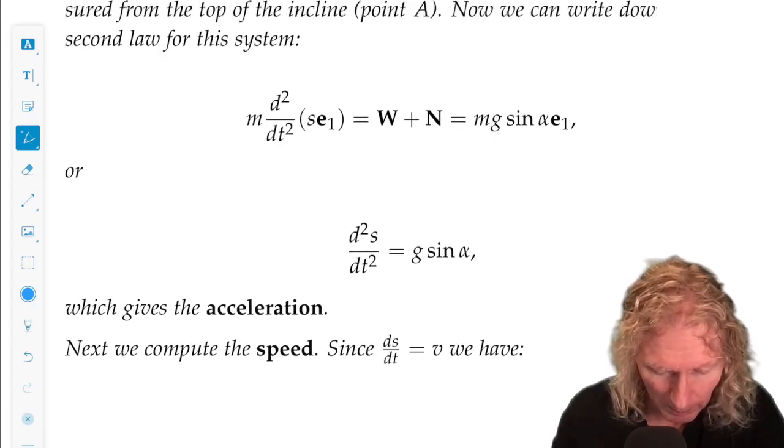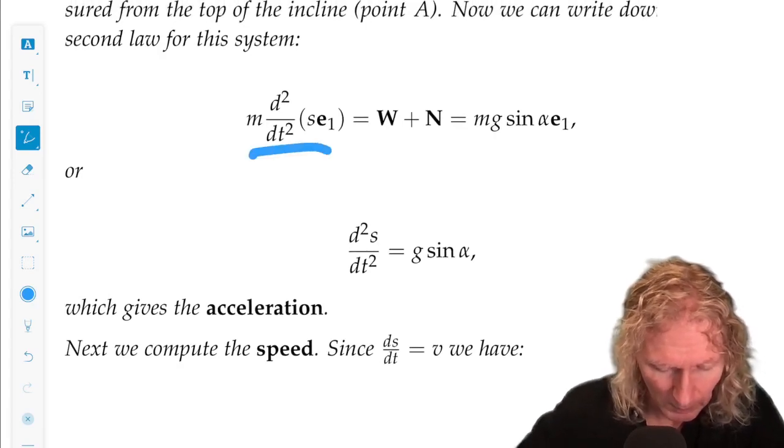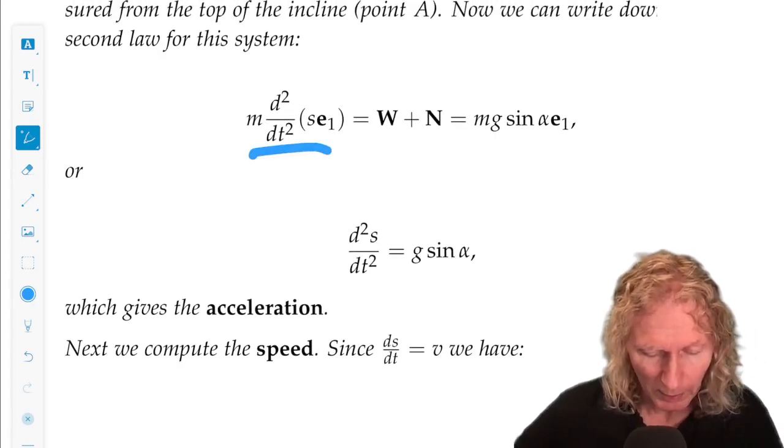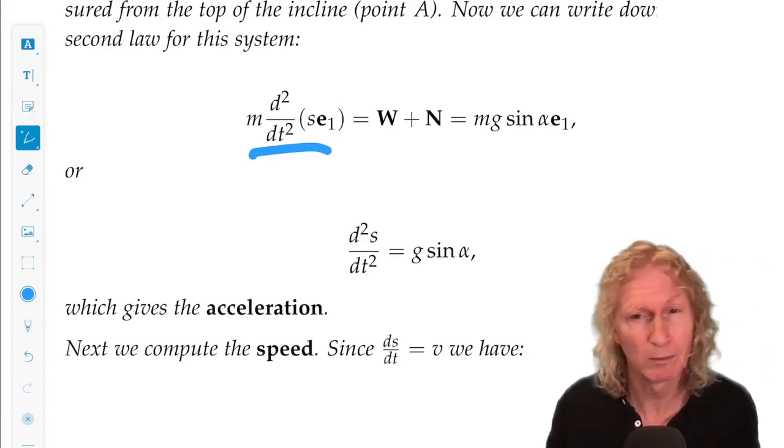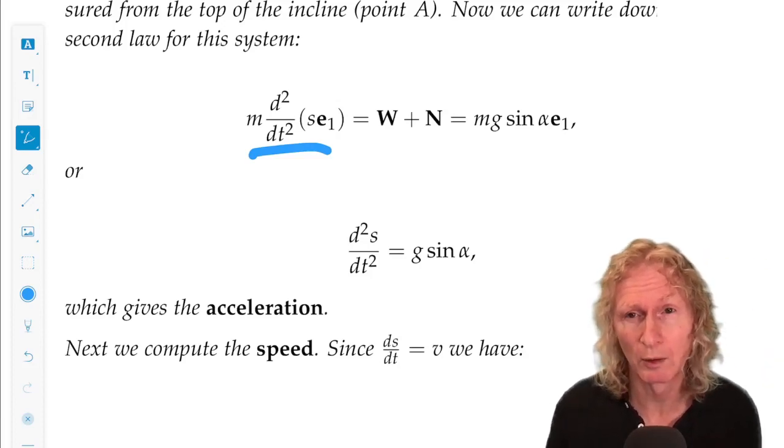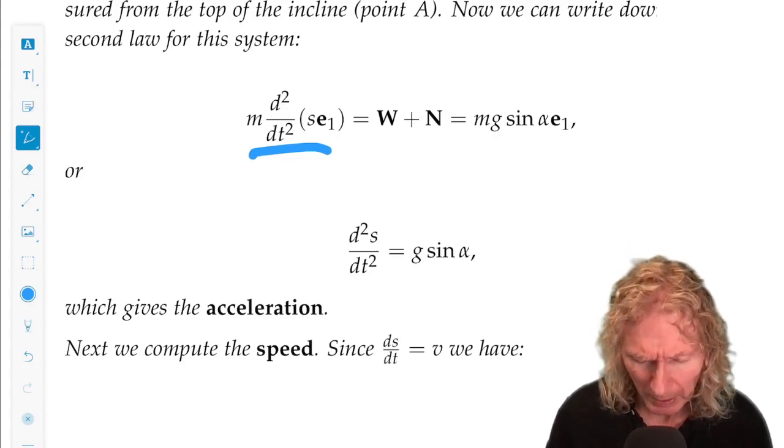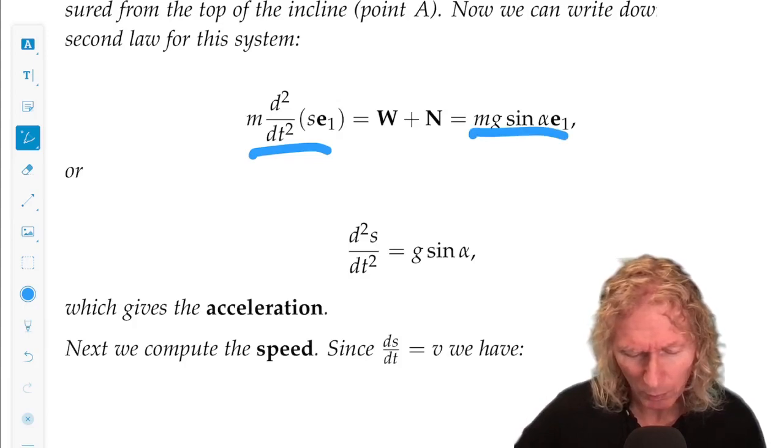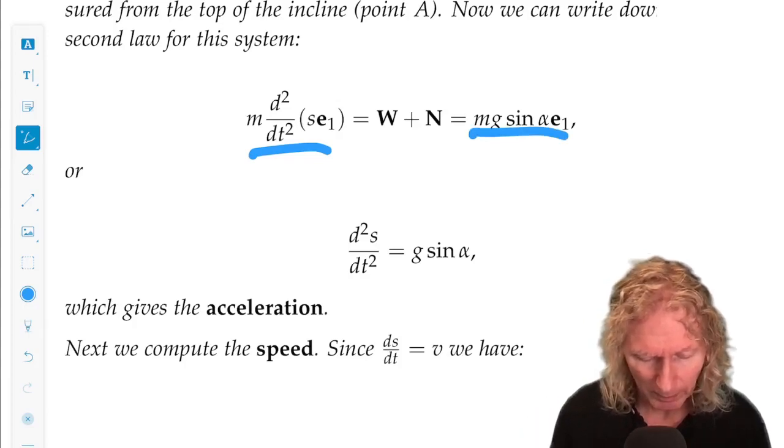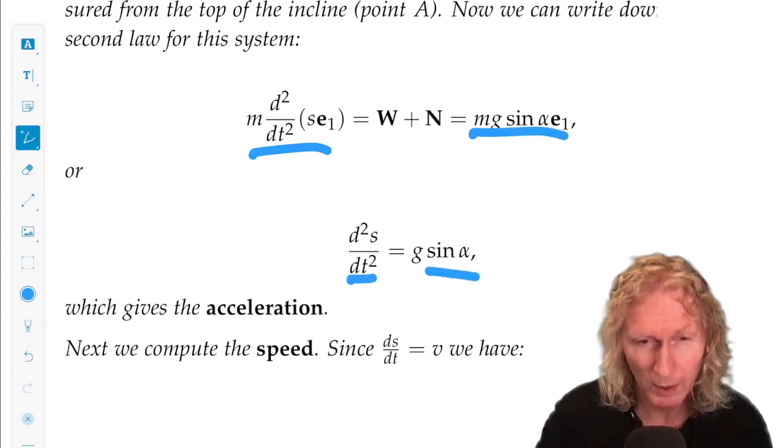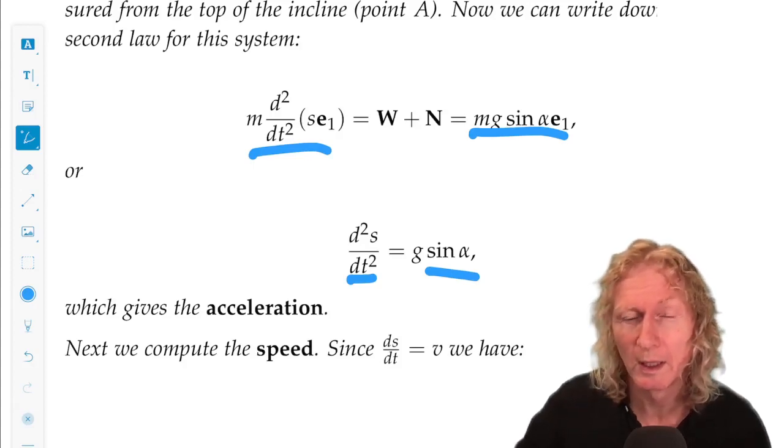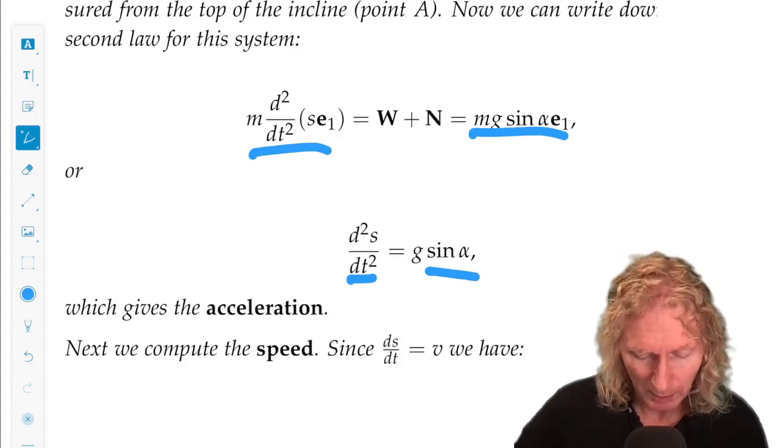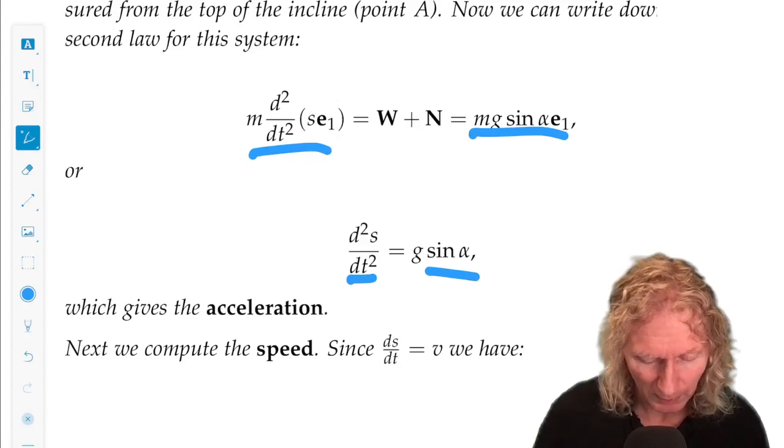Then, m d squared s dt squared e1, that's the acceleration, it's only in the direction, only motion along the plane. And the component of force along the plane is mg sin alpha e1. And we can forget about the e1s for the moment, because that's the only direction that motion occurs. And this is the acceleration.